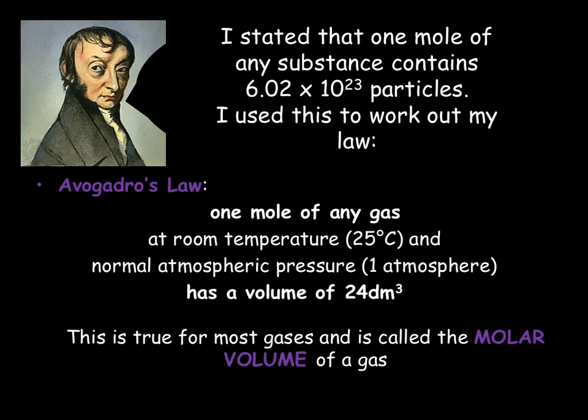As we looked at in the concentrations and moles video we came across Avogadro's constant. Avogadro's constant was that there was 6.02 times 10 to the 23 particles in 1 mole of any substance. We can use this to work out volumes using Avogadro's law. Avogadro's law states that 1 mole of any gas at room temperature, which we take to be 25 degrees C, and at normal atmospheric pressure, which is 1 atmosphere, will have a volume of 24 dm cubed.